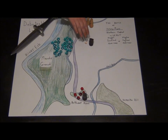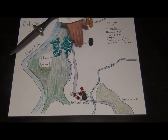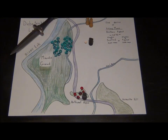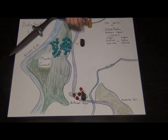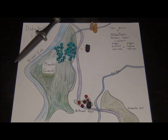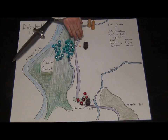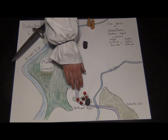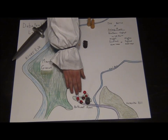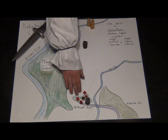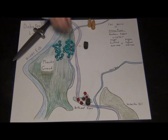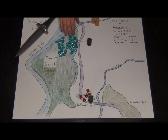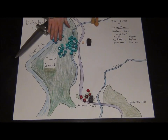Meanwhile, the English cavalry was continuing to drive the Scottish forces toward the River Esk. The combination of the cavalry drive and the sight of the new English infantry caused the Scottish ranks to break. The Scottish broke formation and it was every man for themselves trying to get across the river.